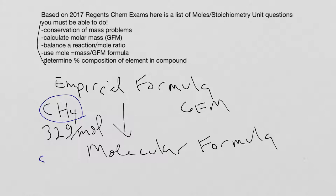The first thing that you're going to do is you're going to calculate the gram formula mass for the empirical formula. So I have carbon and I have hydrogen, one carbon, four hydrogens. Carbon is 12, hydrogen is 1, multiply them out, 12 and 4, and it equals 16.